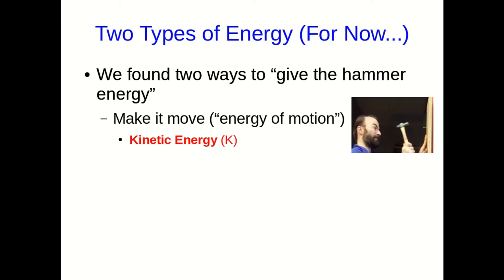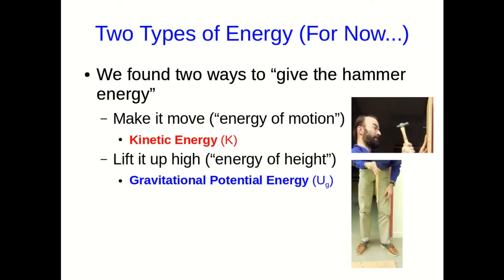But the other way we could give the hammer energy, give it the capacity to do work on the nail, was to lift it up higher than the nail. And so, this is an energy of height. And we'll call this gravitational potential energy. Now, a lot of you who've encountered this already in other courses will want to just call it potential energy and leave it at that. But as we'll see, there are other kinds of potential energy. And so, I'm going to insist that you be more specific. This is gravitational potential energy.